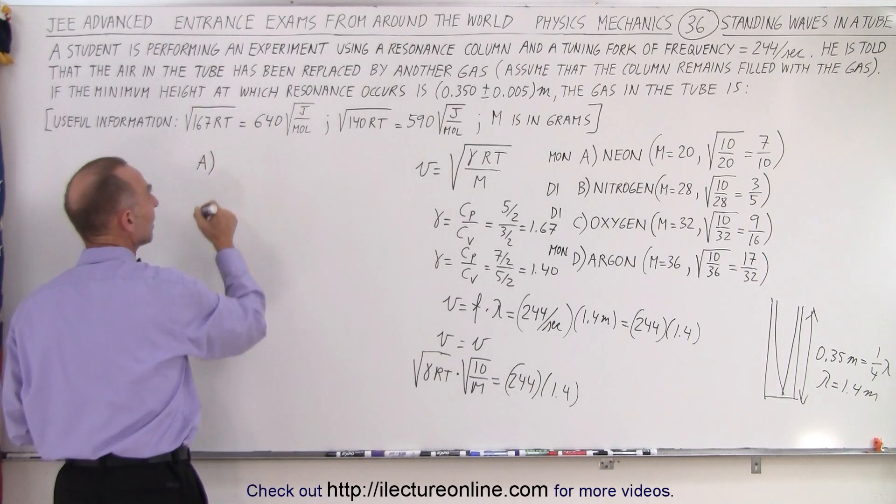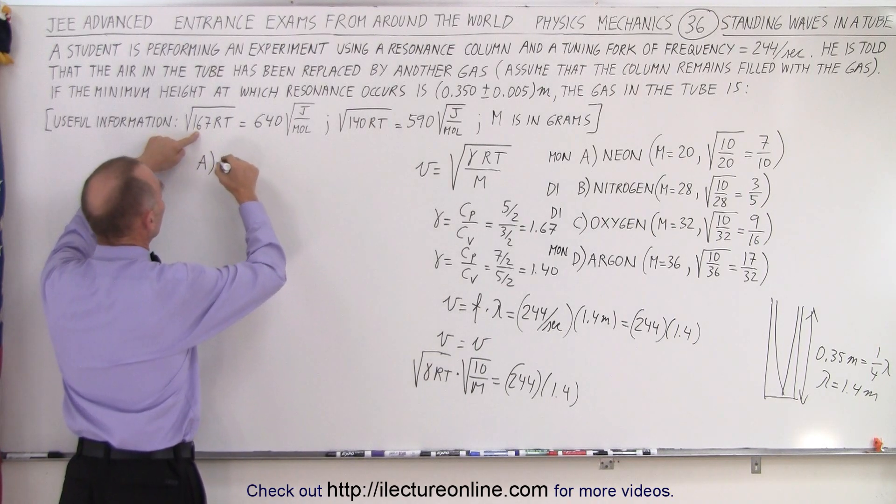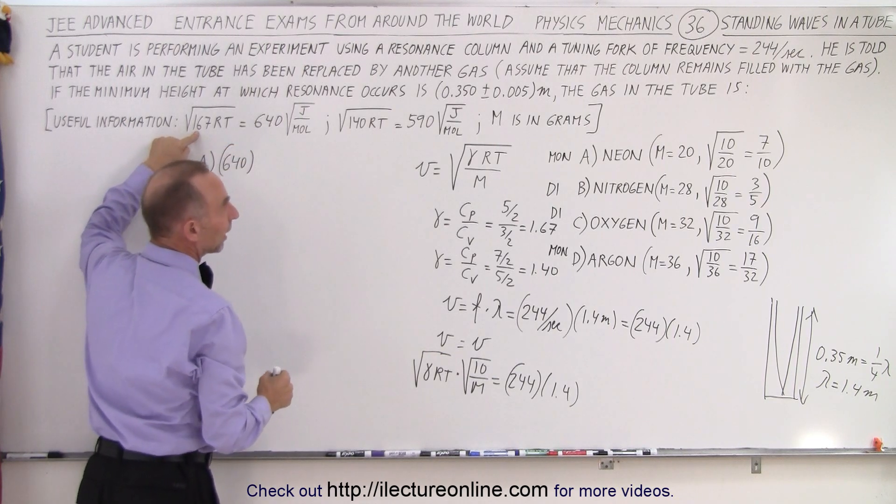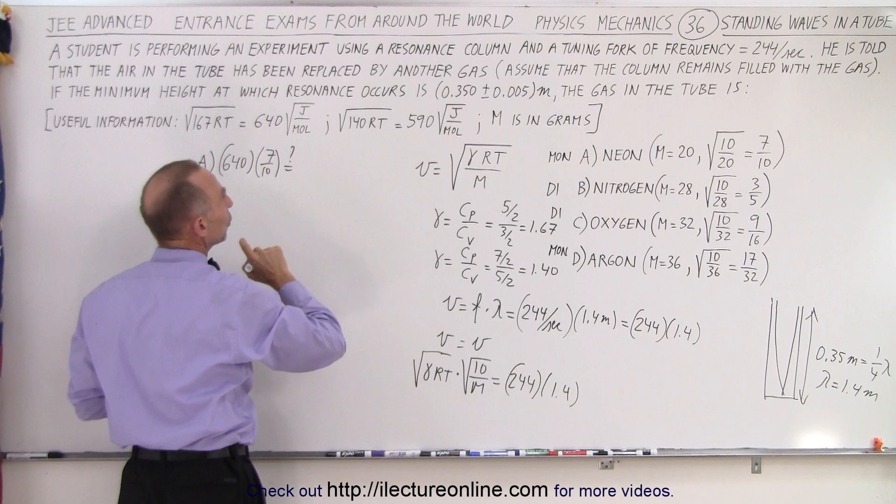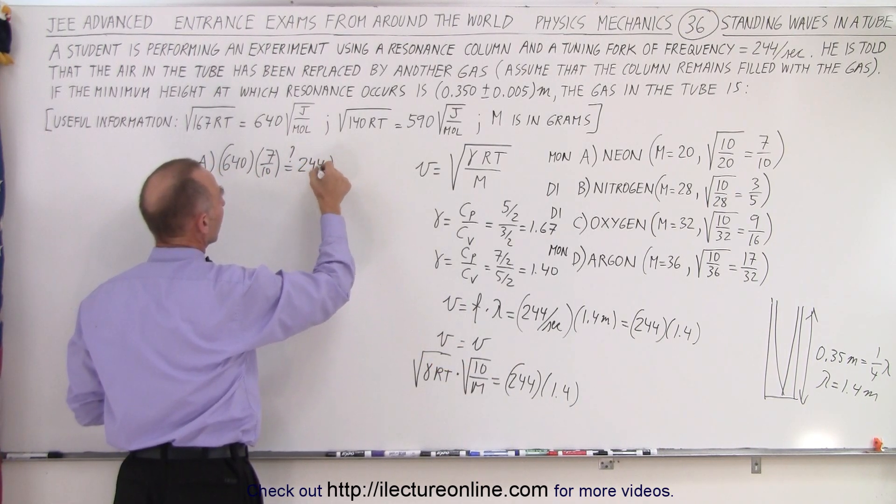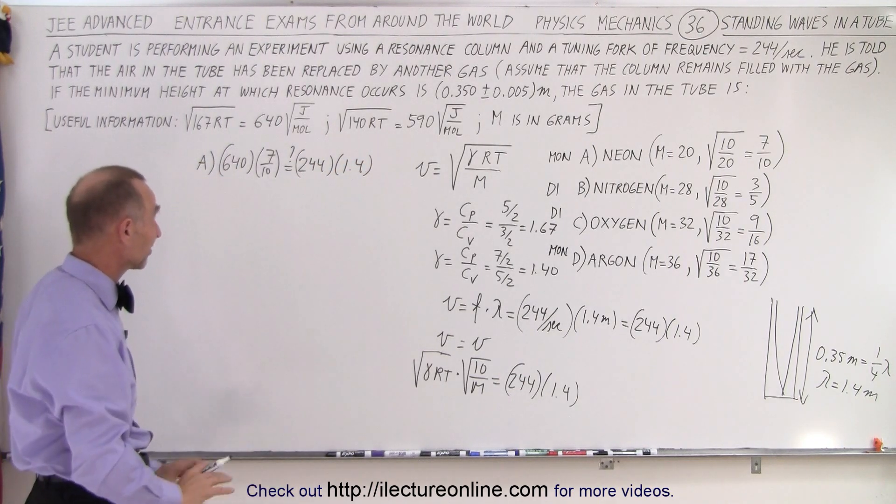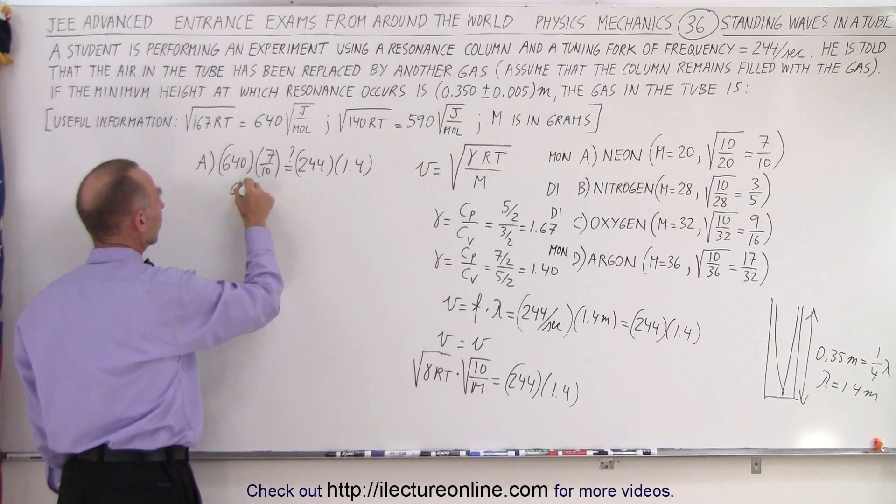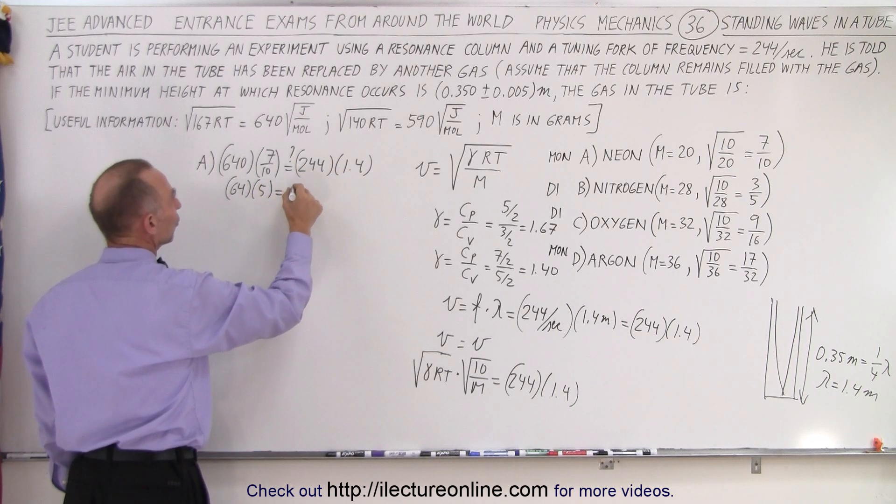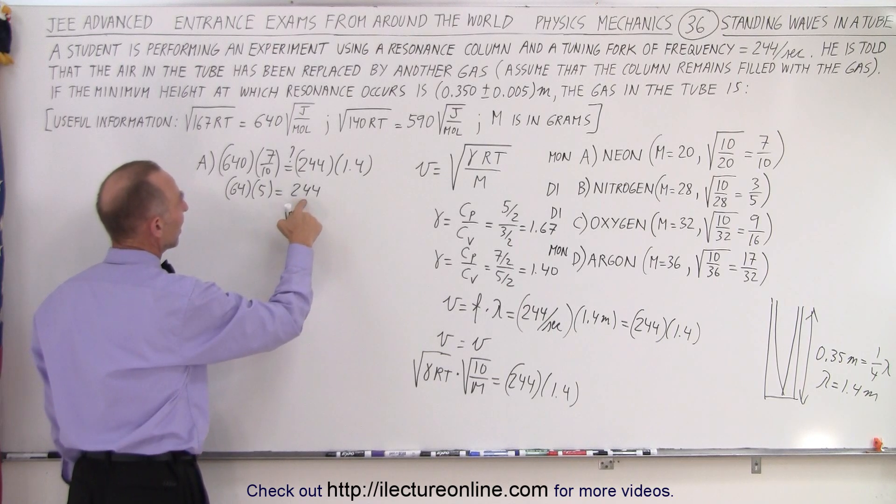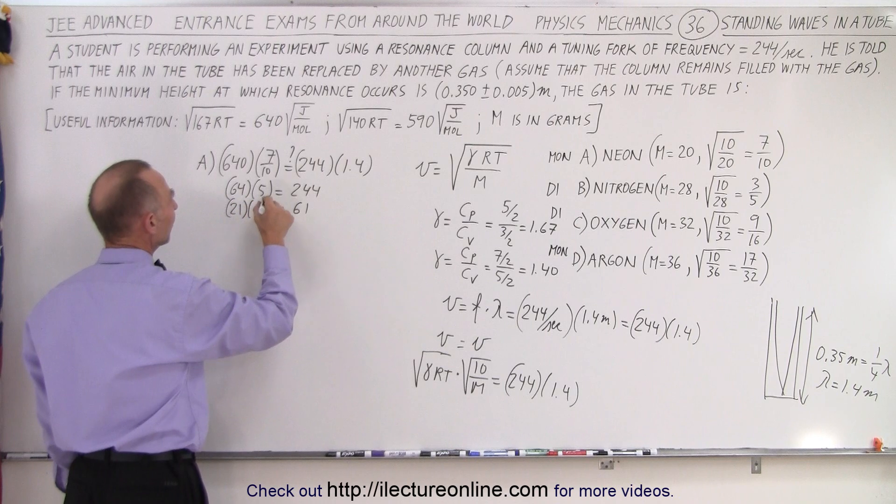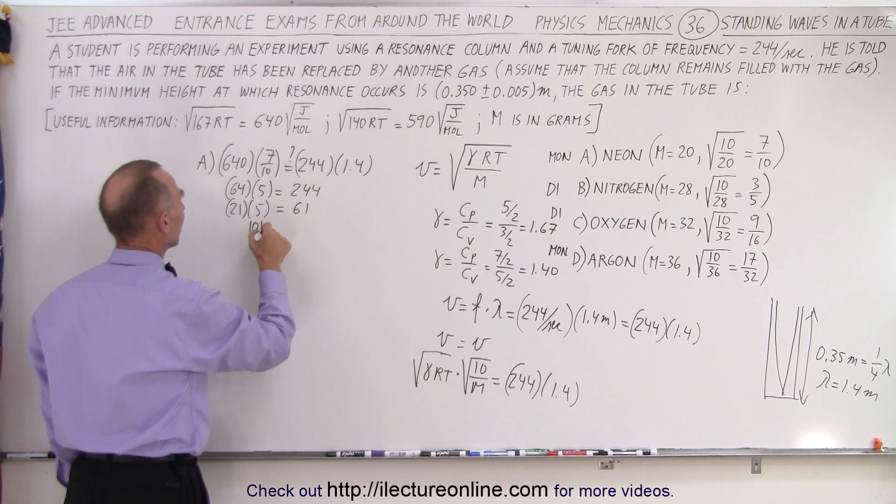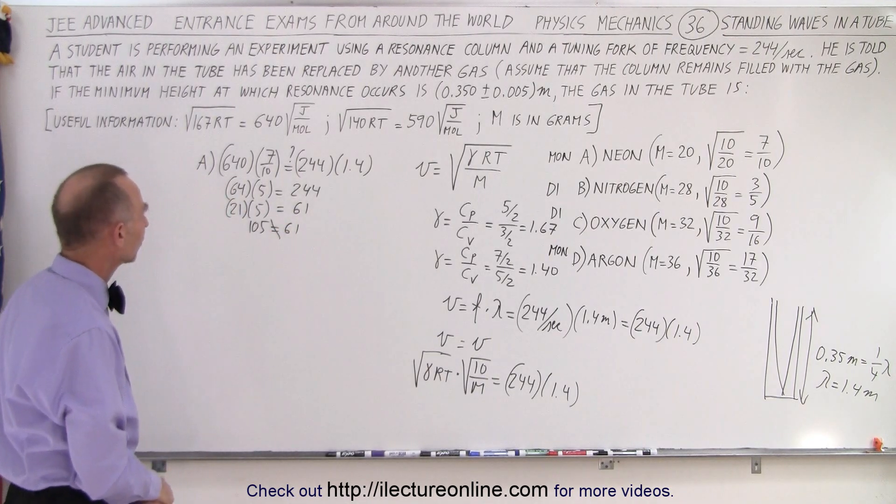First with neon, it's a monatomic gas, so we take the square root of 167 RT, which is 640, multiplied times the square root of 10 over 20, which is 7 over 10. We want to know if that is equal to 244 multiplied times 1.4. This could be written as 64 times 7. That gives us 244.